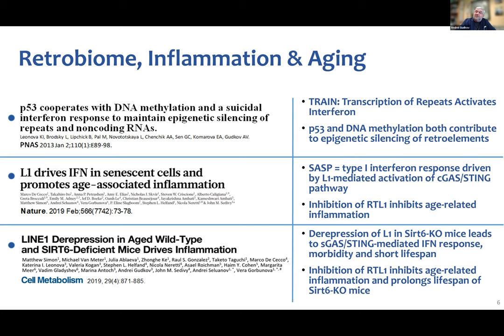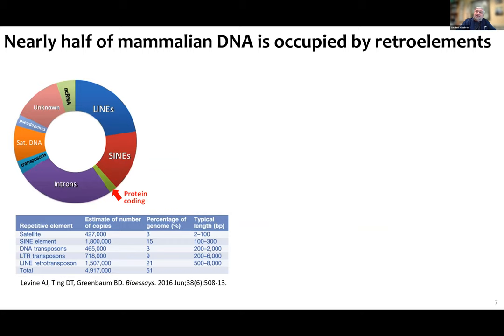This increased activity is translated into inflammation through activation of the cGAS-STING pathway and interferon and NF-κB function. Let's talk about the retrobiome, because I think the half of genome deserves that term — just as we have the term microbiome, why not have the term retrobiome, since it's half of our DNA.